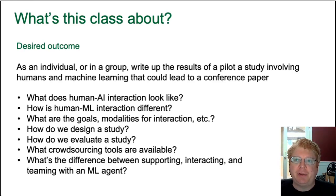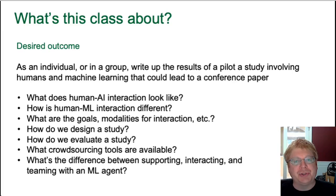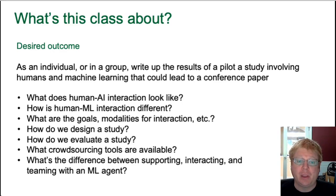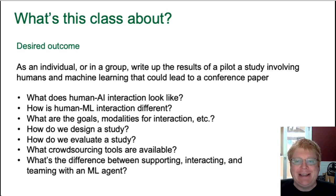Once we come up with a hypothesis, we have to think about how to design a study and see whether our idea has any merit. Once we get those results, we need to evaluate that study — and it turns out humans produce very messy data. We'll also think about what tools are available. For instance, if I'm talking about crowdsourcing, getting multiple people involved from around the world, how do I get that information into my system? And we can think about how deep this collaboration is: is it just a human providing labels to an agent, is it a human and AI interacting, or is it true teaming where a human and an AI can accomplish a task better than either could do independently?